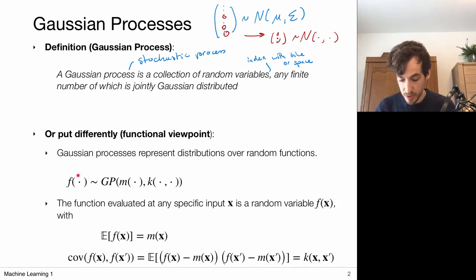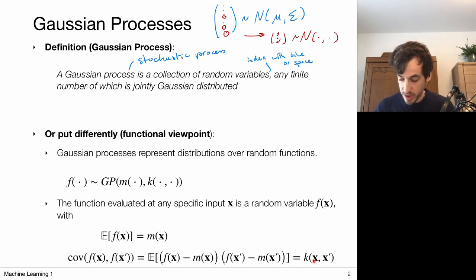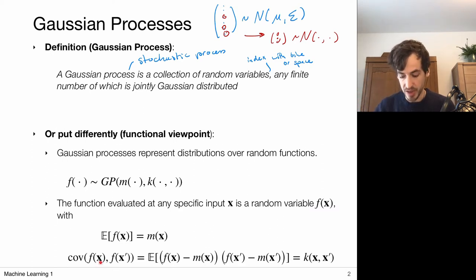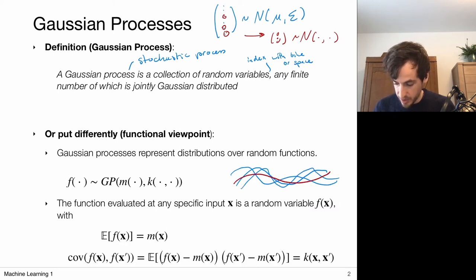This function evaluated at point x is a random variable denoted f(x), because the function can look different every time it is sampled. The function has an expectation given by the mean function, which is a function of x. The covariance between two different points on the function is given by the kernel function, which quantifies how much the function varies at point x relative to another point x prime.